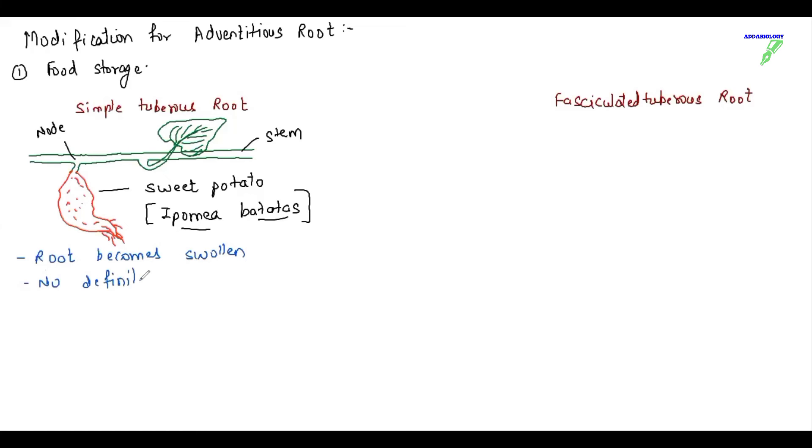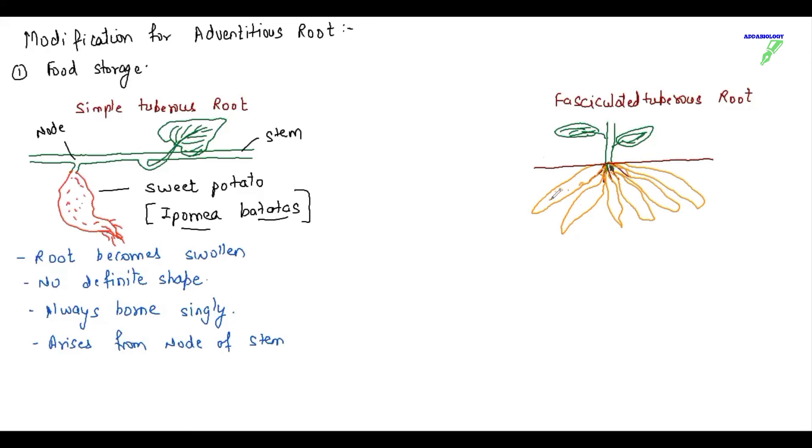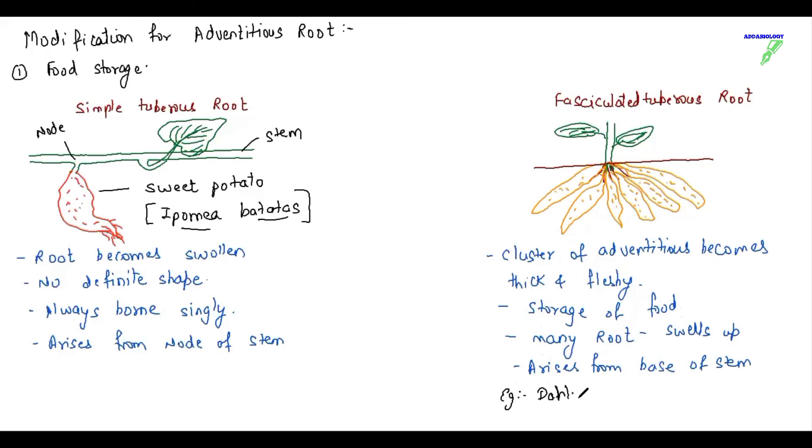Roots become swollen. There is no definite shape. They are always born singly alone, so one node, one root arises from the node of the stem. But in fasciculated root, what happens, many roots swell up to store food, and that's why it is called fasciculated tuberous root. It arises from the base of the stem. So I can say here in fasciculated, the root becomes swollen, but cluster of adventitious roots, they become thick, fleshy to store food. They arise from base of the stem and it swells up. Example for this we have dahlia and asparagus. These are the examples of fasciculated tuberous root.